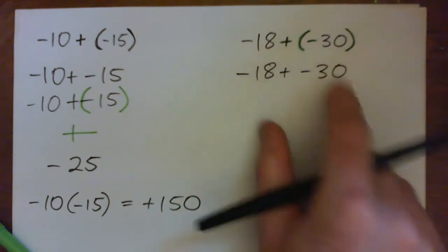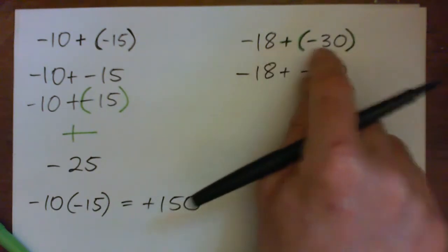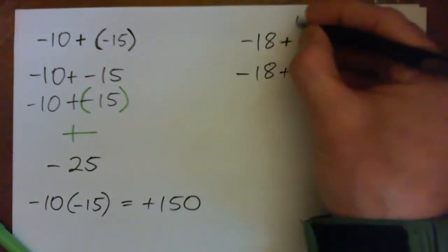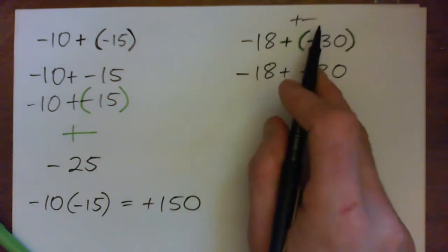It's just put there to make sure we know that the two signs are separated and they're not joined together like a plus minus like that.